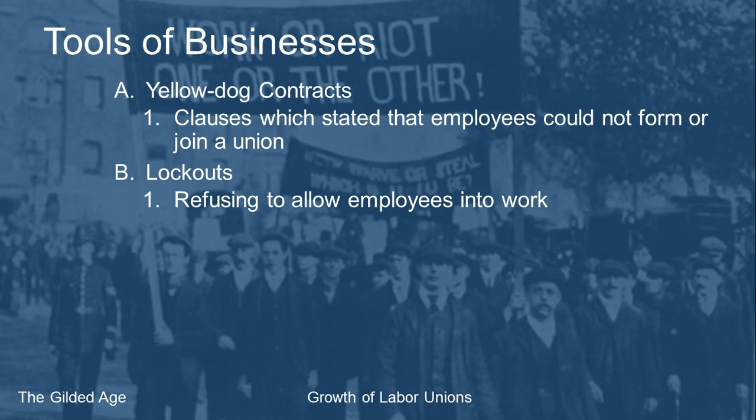As a union is forming, these workers aren't going to have saved up money for a strike — they're still living paycheck to paycheck. All of a sudden they show up to work and the door is locked. The boss says he's not going to let them in. If they can't go to work, they can't get paid, and their family starves. The boss says the only way he'll let them in is if they give up the leaders of the movement to unionize.